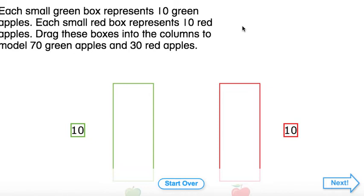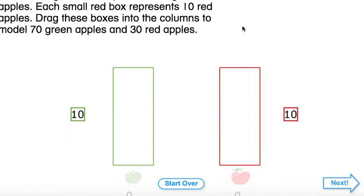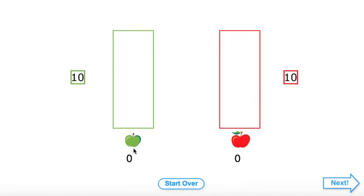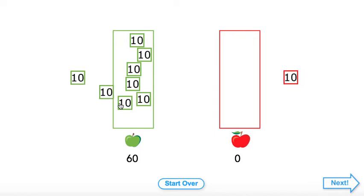Drag boxes into the columns to model 70 green apples and 30 red apples.